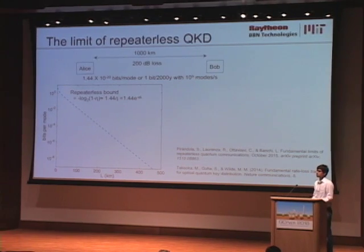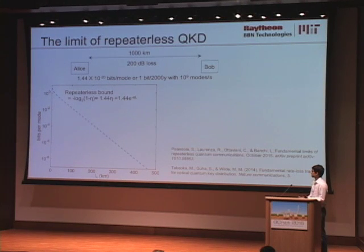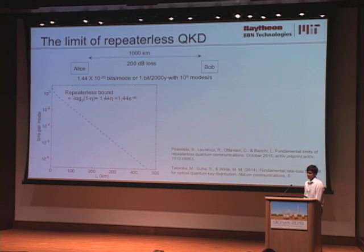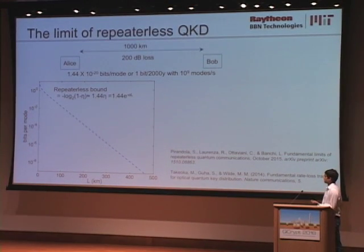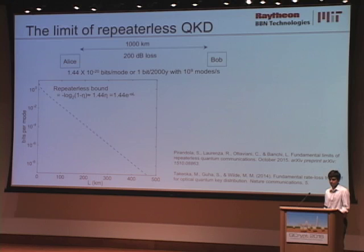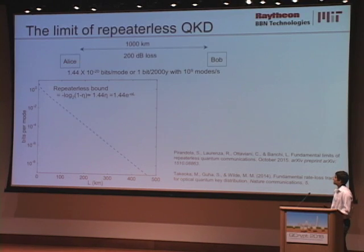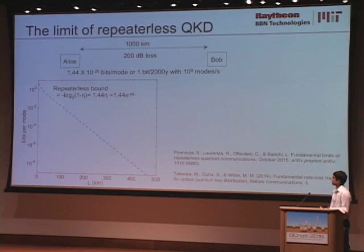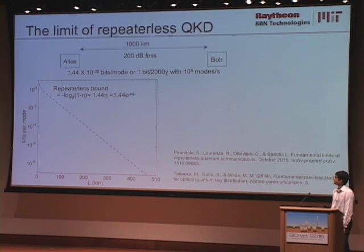There's a fundamental limitation in repeaterless QKD: the rate falls very fast as the communication distance increases. In the absence of repeaters between Alice and Bob, the best possible key rate scales as the transmissivity of the channel, eta, which decays exponentially with distance. At 1000 km you have 200 dB loss, and without repeaters the bits-per-mode rate is on the order of 10^-20. Even with a gigahertz repetition rate, your key distribution rate would be 1 bit every 2000 years. So this is clearly not practical.